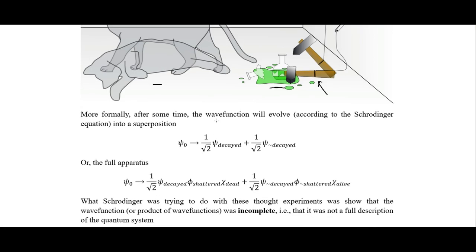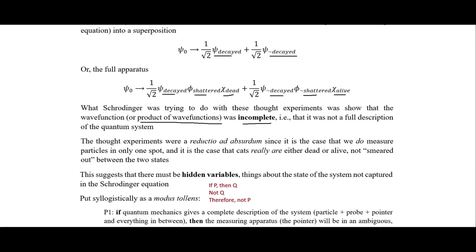More formally, after some time the wave function will evolve according to the Schrödinger equation into a superposition of decayed and not decayed — or, looking at the full apparatus: decayed, shattered, and dead plus not decayed, not shattered, and alive. What Schrödinger was trying to do with these thought experiments was show that the wave function was incomplete — in other words, not a full description of the quantum system.